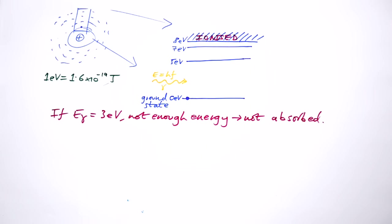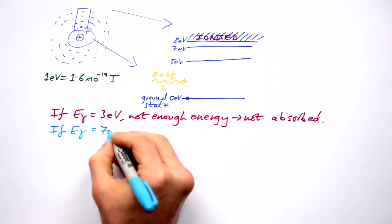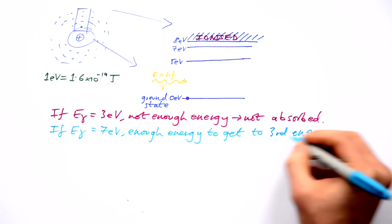But if it did have exactly, let's say, seven electron volts, it's enough to get it to its third energy level.